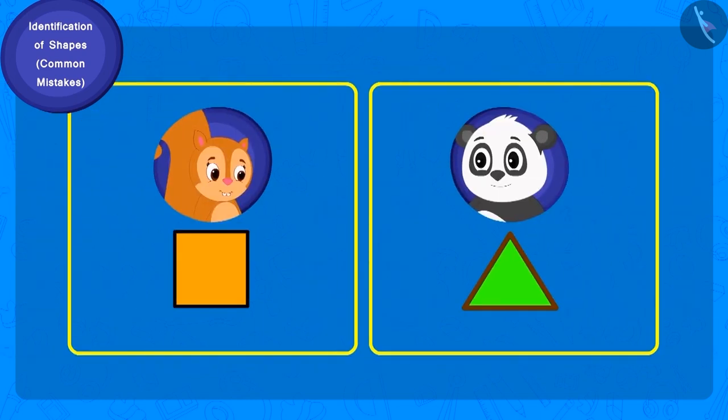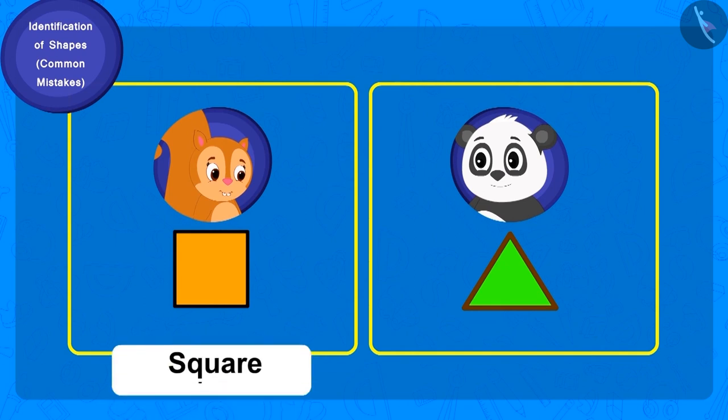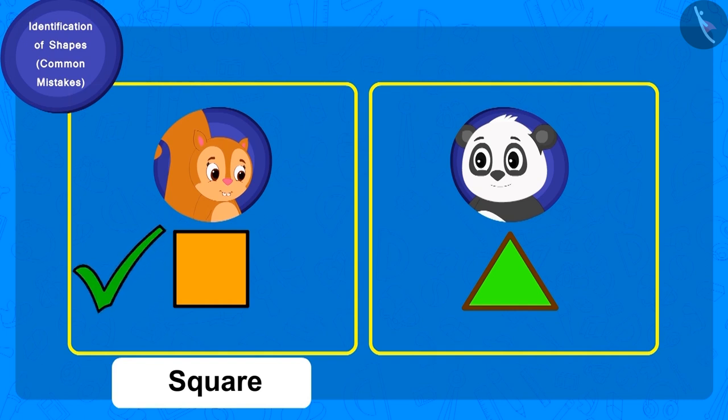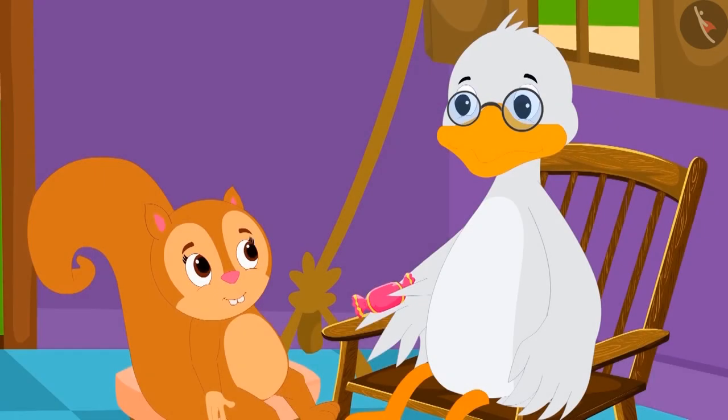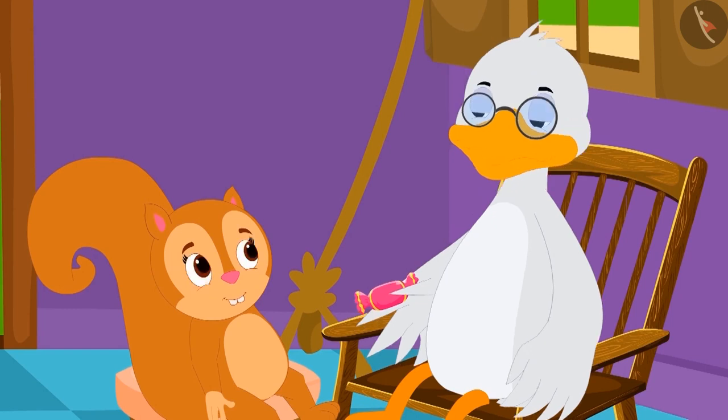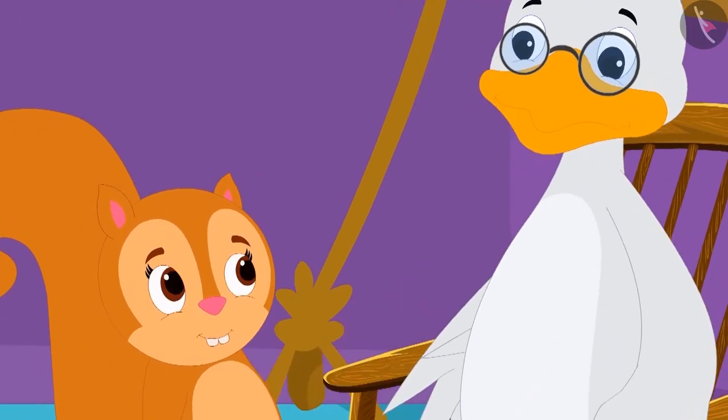So whose answer is correct? Yes, Chanda's answer, square, is absolutely correct. And Golu's answer, triangle, is incorrect. Chacha gave Chanda one toffee for her correct answer.